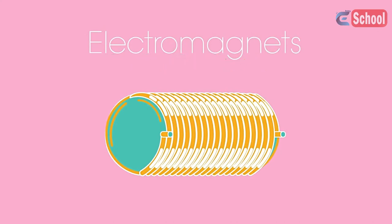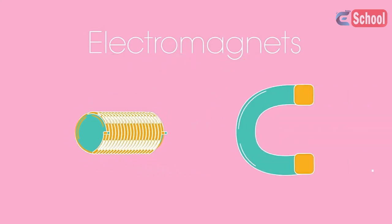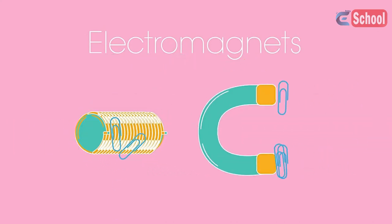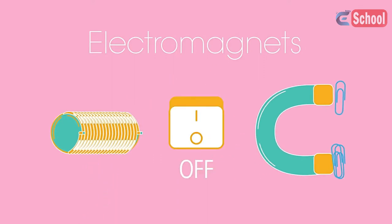Electromagnets are incredibly useful. They can do all the things a normal magnet can do, but can also be switched on and off.